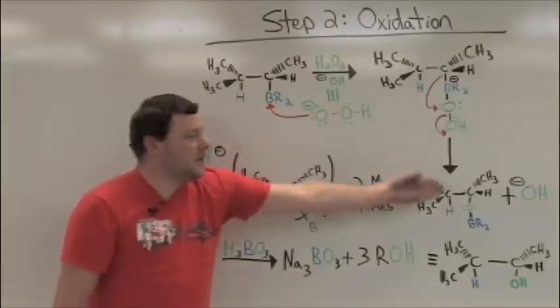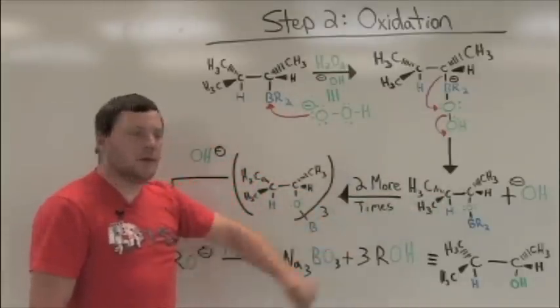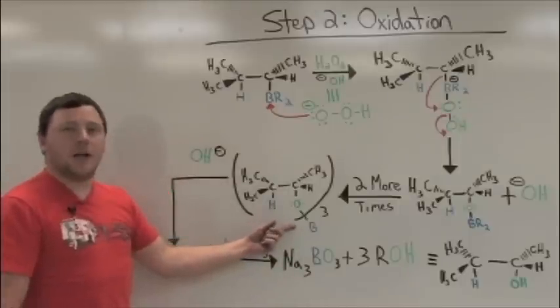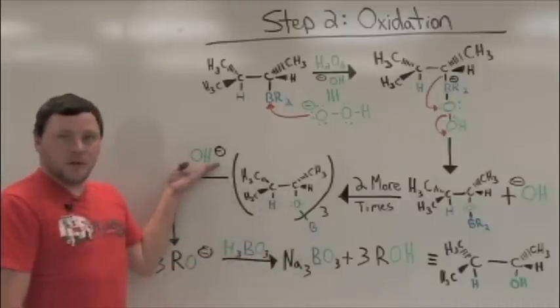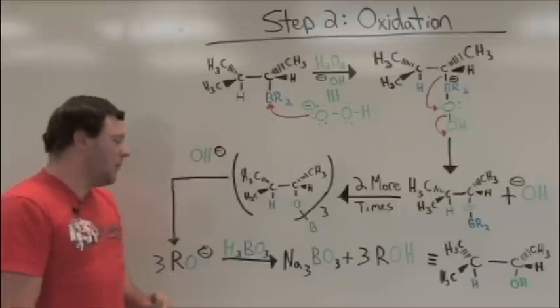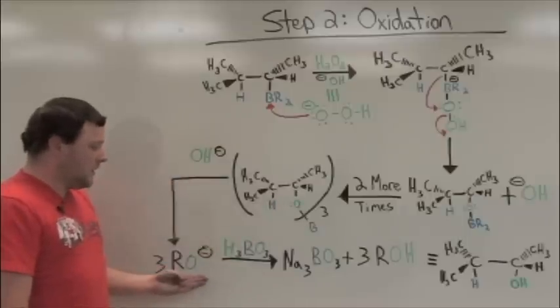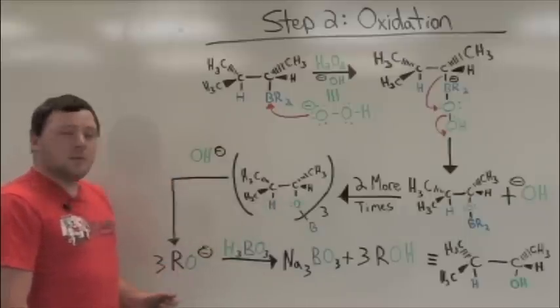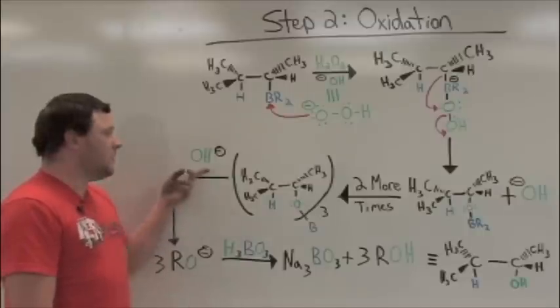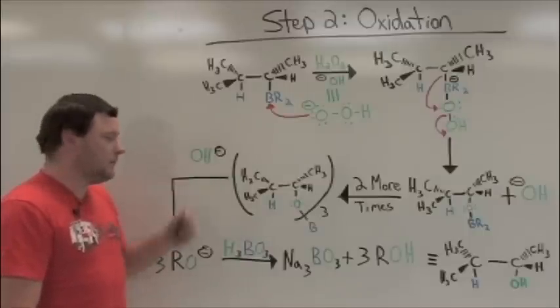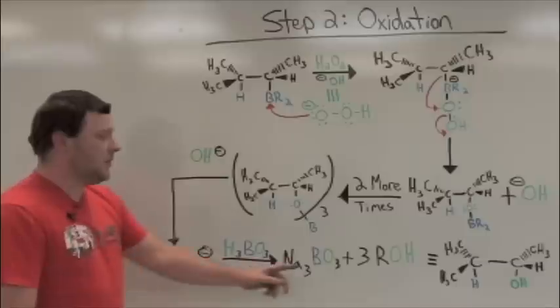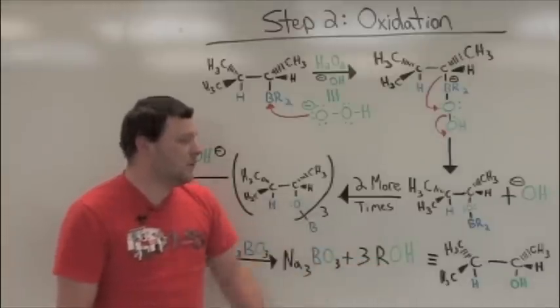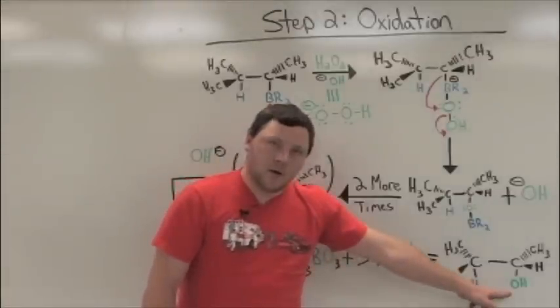This process happens two more times, giving us a trialkyl borate. Being in such abundance of hydroxide, it's highly probable that this alkyl oxide will be displaced by substitution of hydroxide. This displaced alkyl oxide through proton transfer forms our alcohol.